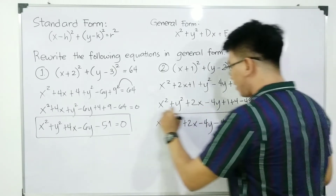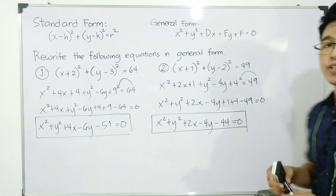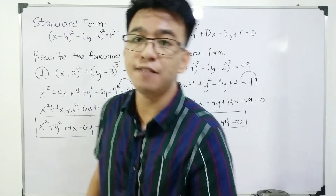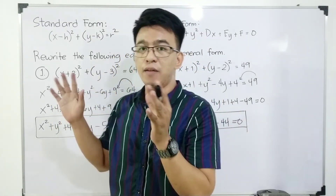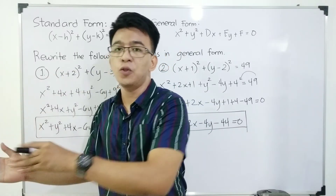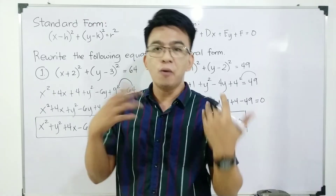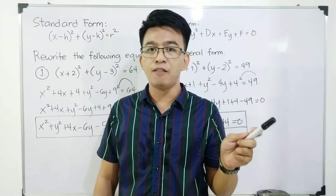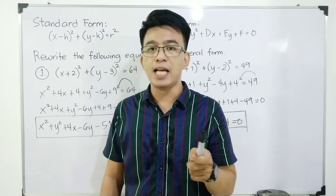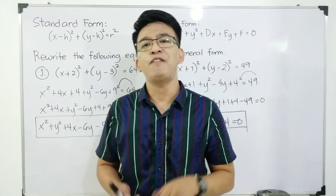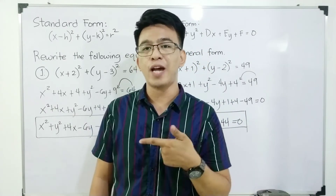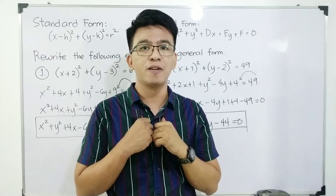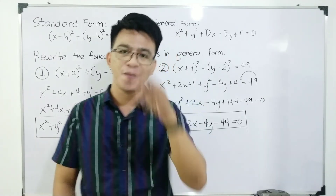This is now the general form of the second given equation of the circle. I hope you learned something from this video on how to transform a given equation of a circle from its standard form to its equivalent general form. If you want to watch our video on how to write an equation of a circle from general form to standard form, the link is in the description box. If you are new to my channel, don't forget to like and subscribe and hit the bell button for updates on our latest uploads. Again, it's me, Teacher Goy. Thank you very much. Bye!